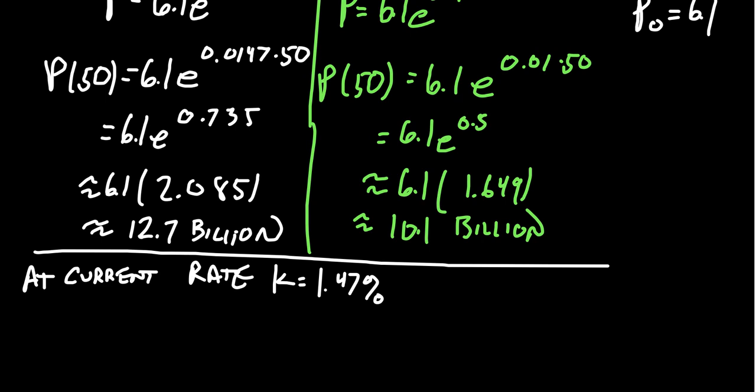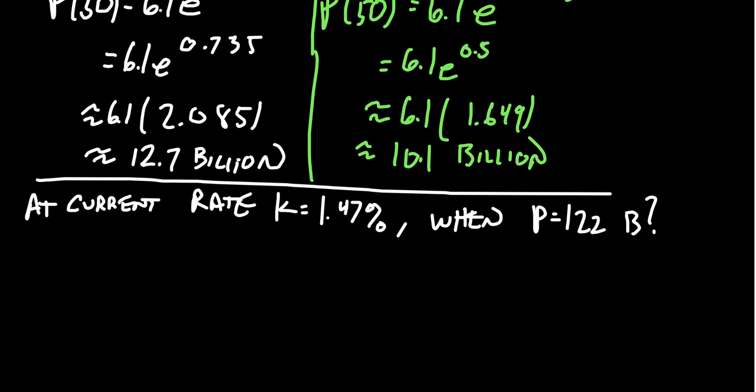When does the population equal 122 billion? So we could ask this question about when does it reach a certain threshold. Maybe this is significant. 122 billion, of course, is much larger than the 6.1 we started with or even the 12.7. But we can actually use this equation to solve that question. We need to know when the population is 122 billion. The current population is 6.1 billion. They're growing at a rate of 0.0147 T. We have to solve for T.